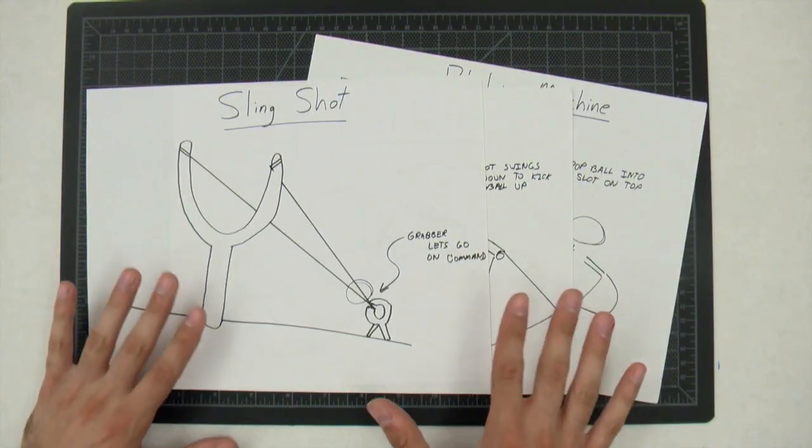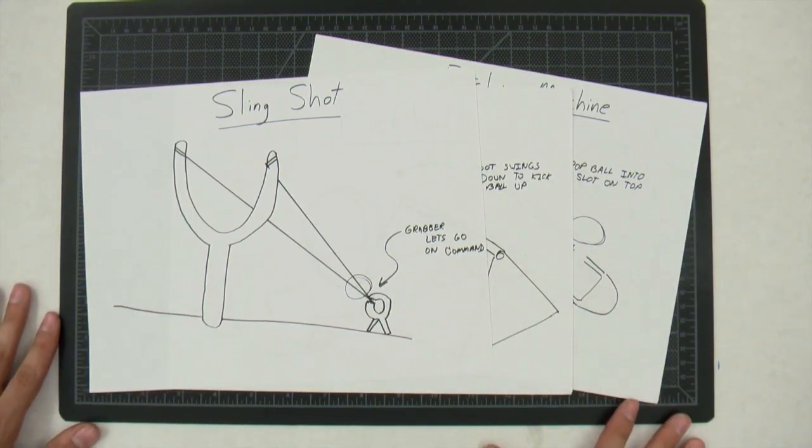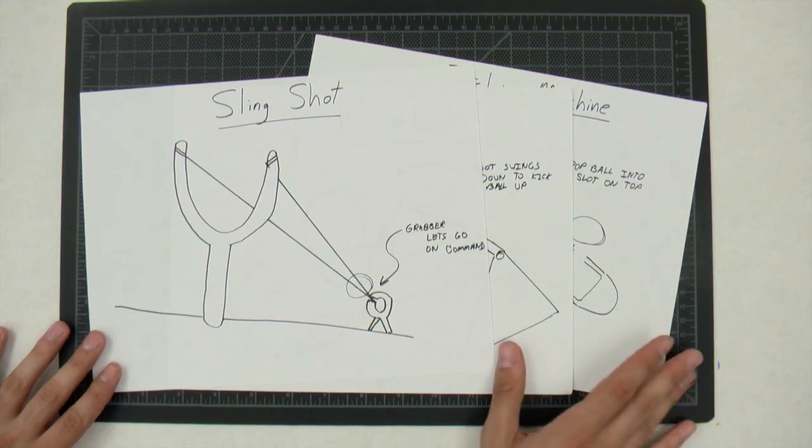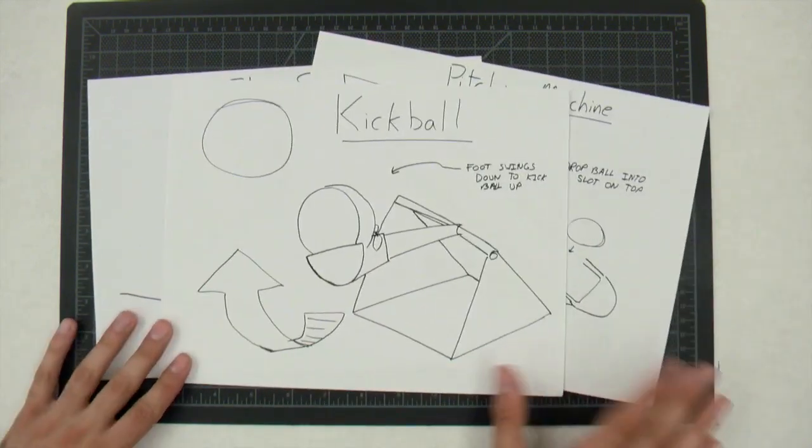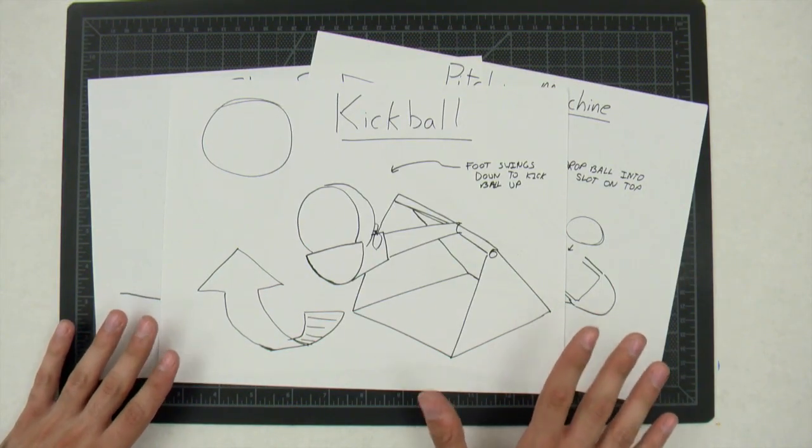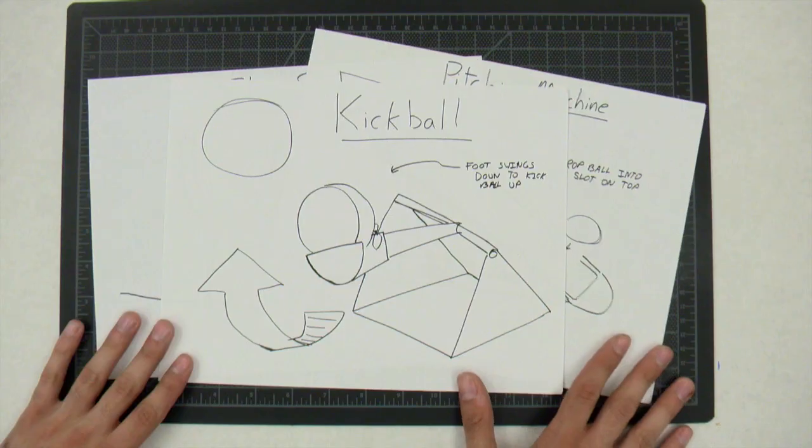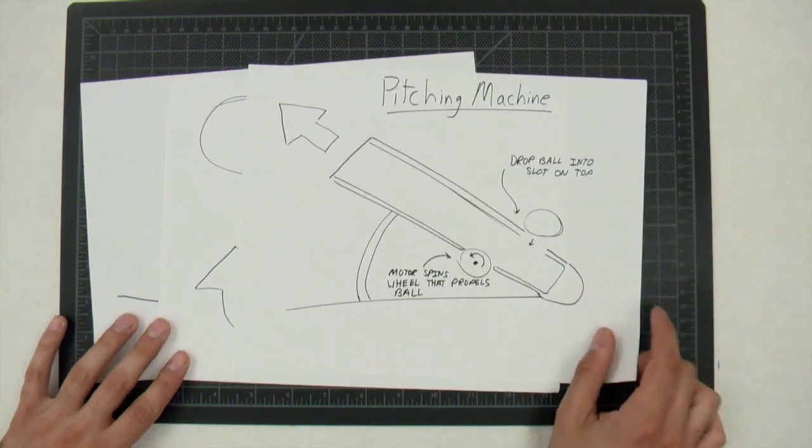These sketches convey the product idea way better than words alone. You see how clear they are and how the idea is conveyed really quickly just by taking a quick look? Something like this doesn't have to be perfect or take a long time either. This type of sketching is sometimes called ideation sketching. There are a few basic pointers that can help you get started making your own sketches.